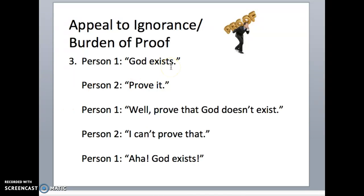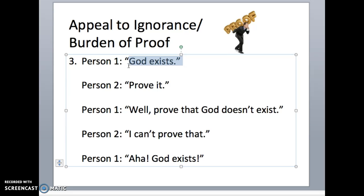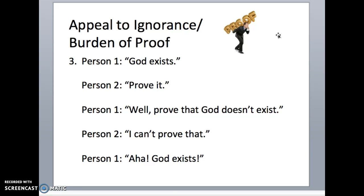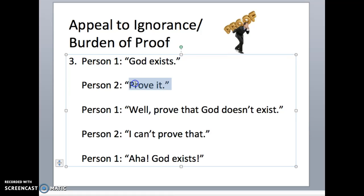Number three: God exists. There are lots of proofs for the existence of God out there — the ontological argument, for example, is one that's popular. But this argument is one that's just not logical. If you're going to argue for the existence of God, you might as well have a really good argument and know which ones not to use. Person 1: I think God exists. Person 2: Prove it. Person 1: I can't prove that God exists, but can you prove that God doesn't exist? Person 2: No. Person 1: Well, then God exists. Just because somebody can't disprove God doesn't de facto make God exist.